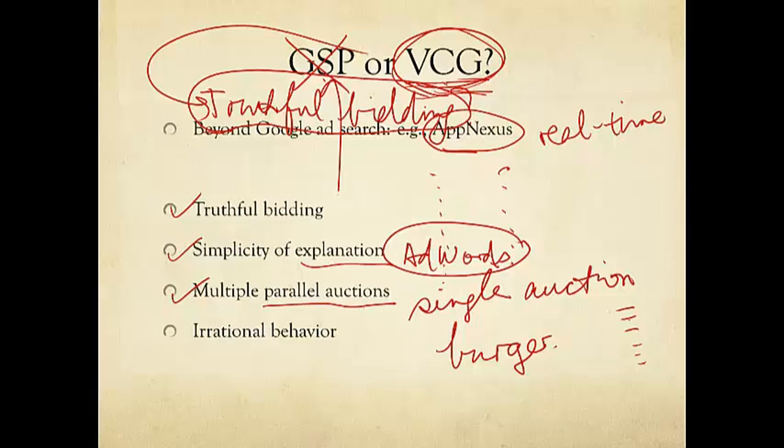There's also one more. That is, the consumers may have irrational behavior. So, even if they learn that Google, say, switches from GSP to VCG, and they know that VCG induces truthful bidding, they just may decide not to do that. They may keep the same behavior as before to shade their bids as if they were still living in the GSP world.